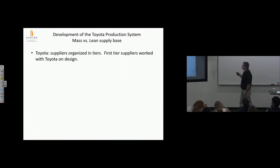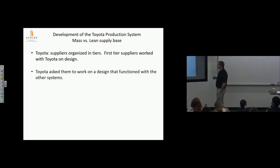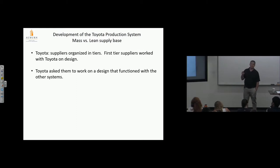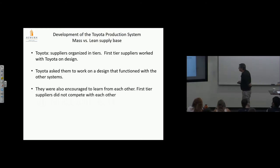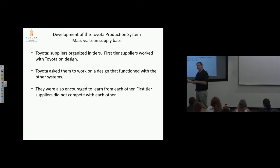Toyota suppliers organized in tiers. First tier suppliers worked with Toyota on design, so they had a part to play in designing the product itself. Toyota asked them to work on a design that functioned with other systems—'We don't care what you do, here's what we need it to do. Work on it. We'll give you all the information you need to develop the best product with the highest quality and lowest cost. You have full discretion.' They also encouraged them to learn from each other. First tier suppliers did not compete. That's big. Now they can talk to each other, work together. 'What's that design you're making on the brake system? We're designing the lines that feed it. Maybe there's a coupling between the two systems we can agree to that's going to save us both money.' Can't happen in Detroit.